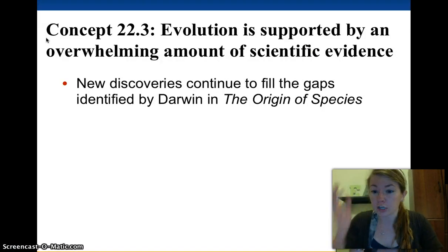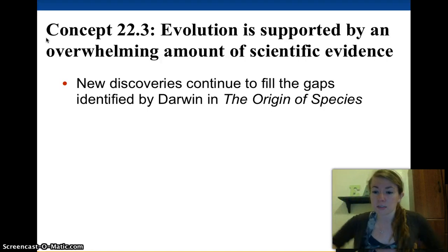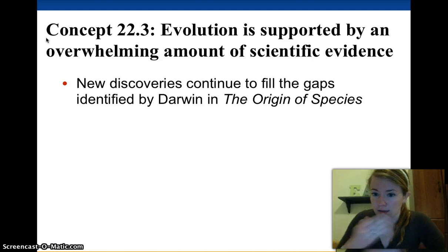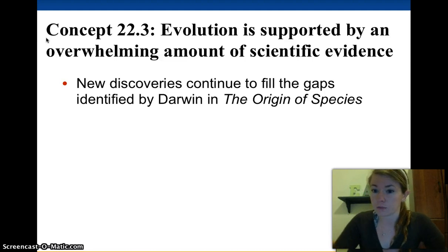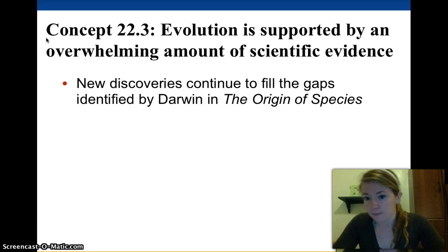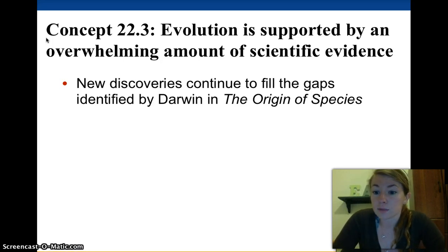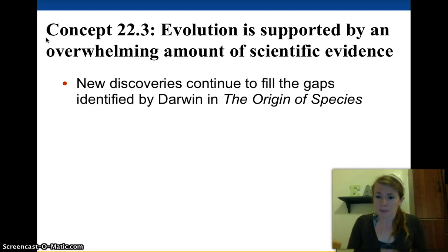Remember, Darwin never actually called it evolution. He called it descent with modification. He noticed that all these species were changing a little bit with every single generation, which was different than what had been previously thought during his time. At that time, everyone thought God made the world the way it is and it's not changing. And Darwin was beginning to see that that probably wasn't the case.